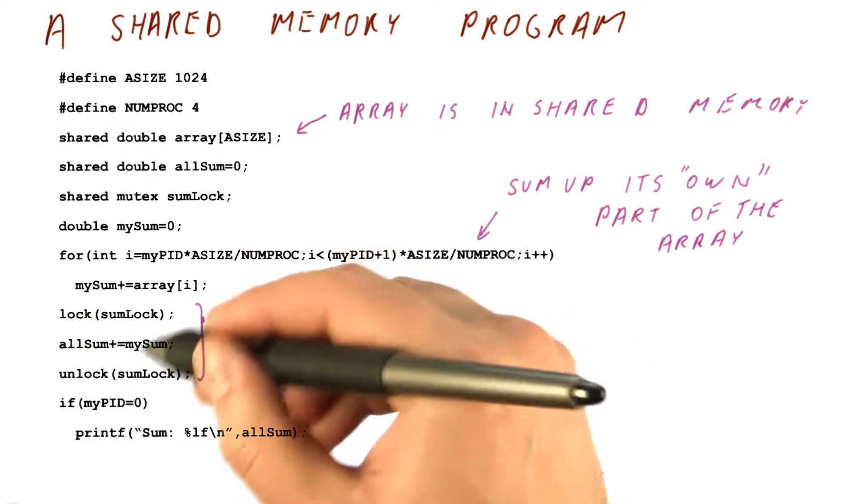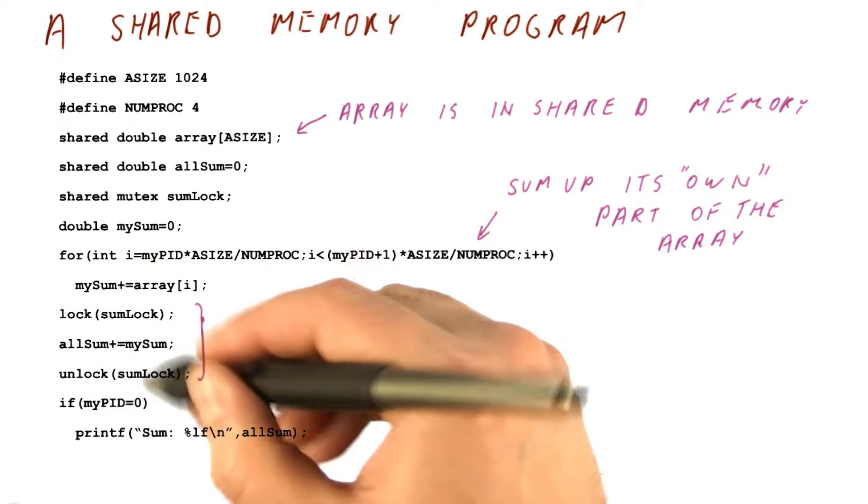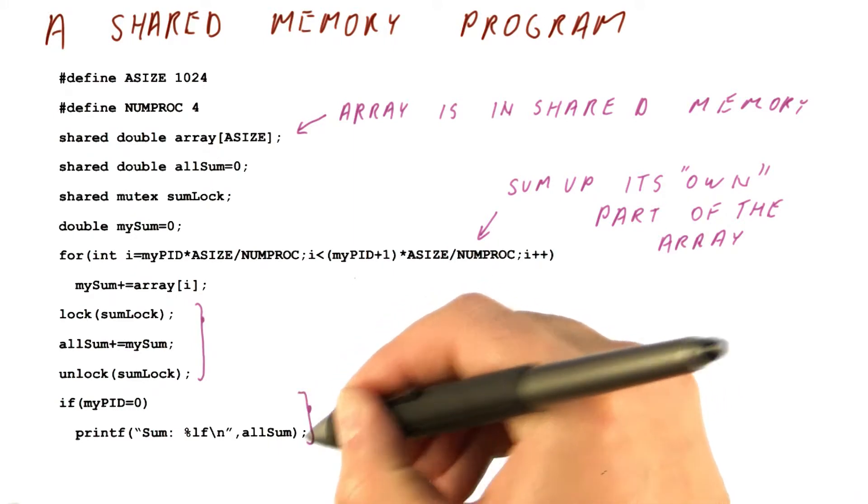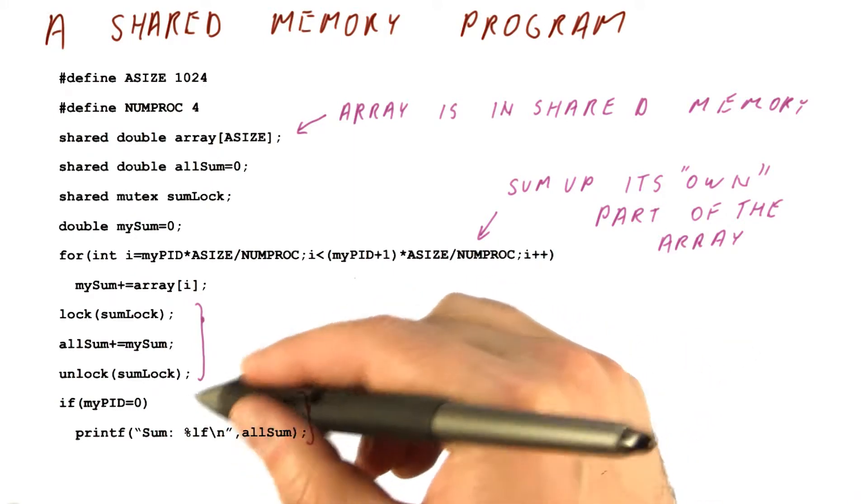We don't have to control that order or anything. All that needs to happen is that all of them have added the sum together. And now, we still have to make sure that one of the cores prints out the sum.